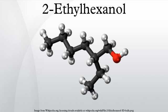Industrial production: 2-Ethylhexanol is produced industrially by the aldol condensation of n-butyraldehyde, followed by hydrogenation of the resulting hydroxy aldehyde. The overall process is very similar to that of the Guerbet reaction, by which it may also be produced. About 2,500,000 tons are prepared in this way annually.